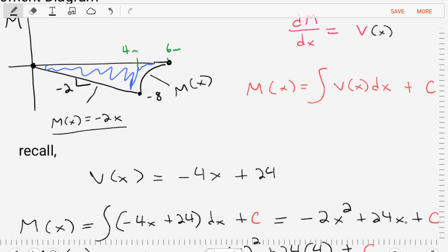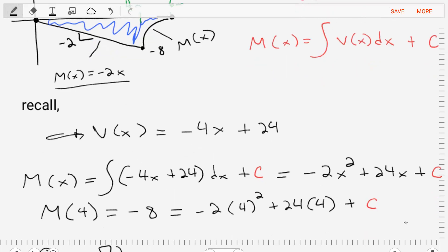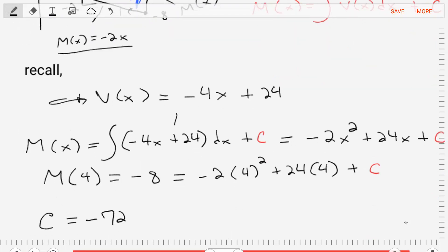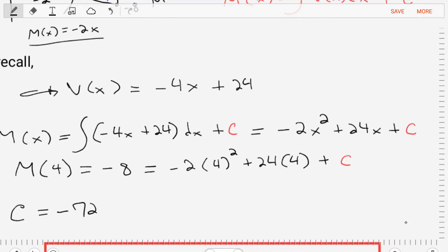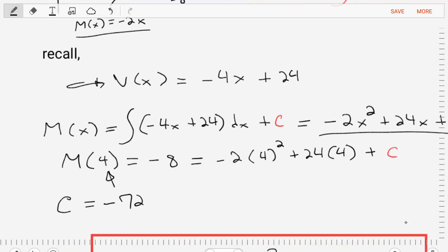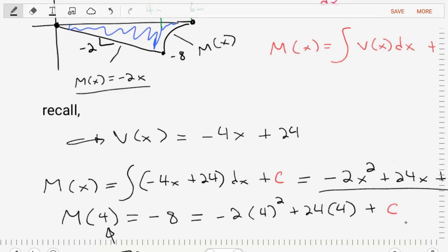Okay, so let's get started. Let's recall that our shear force between four and six meters is negative four x plus 24. Let's plug that in to this indefinite integral. And we'll find that mx is equal to negative two times x squared plus 24 times x plus c, which is an unknown. To find that c, let's evaluate m at four meters.